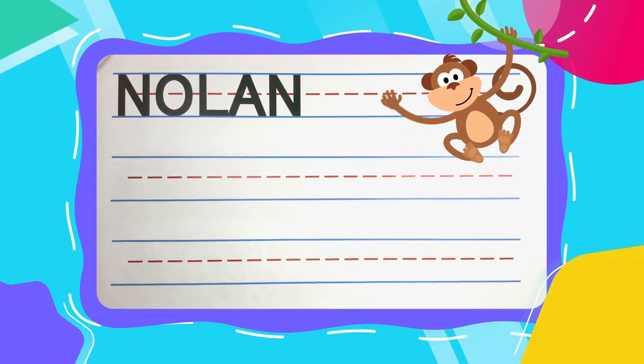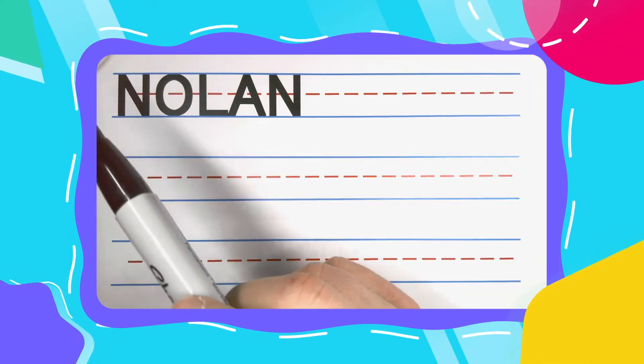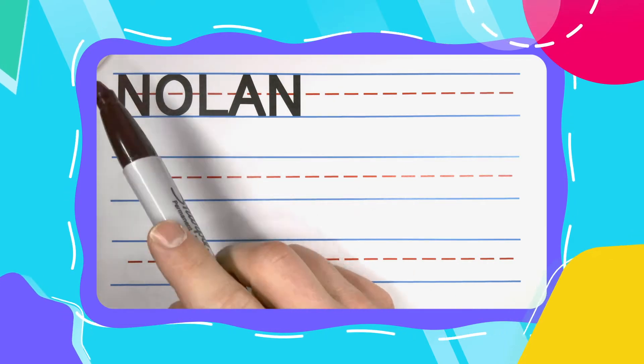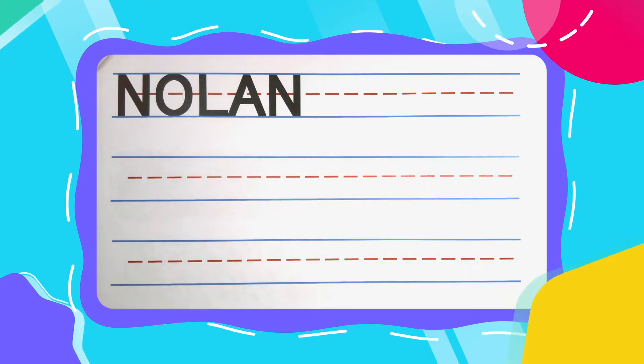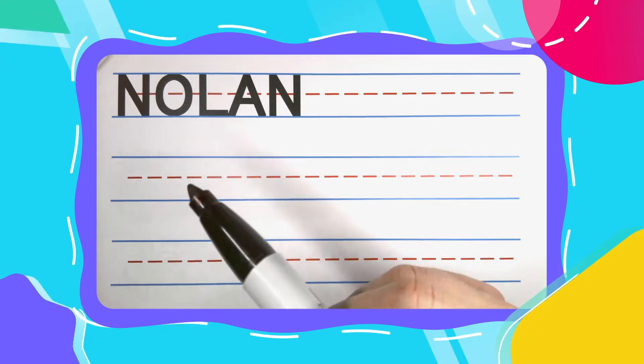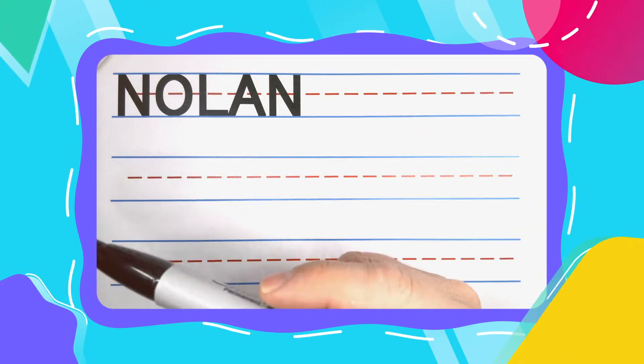Today we're going to write the extra special name Nolan. Nolan is spelled N-O-L-A-N. If your name is Nolan, you have a super cool name, and I'm honored you're here to learn how to write it with me today. Now, let's get started.